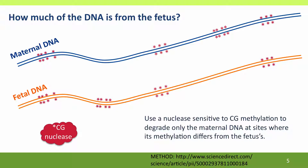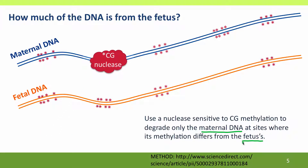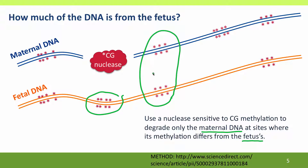There are nucleases that will cut at specific sequences only if the DNA doesn't have the methyl groups on it, typical of the cytosine methylation that determines imprinting. There are a number of sites where the methylation pattern of the maternal DNA is different than that of the fetal DNA. By incubating DNA from the maternal bloodstream with this nuclease, it's possible to calculate how much of the DNA in the mother's blood is fetal DNA.